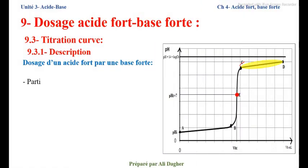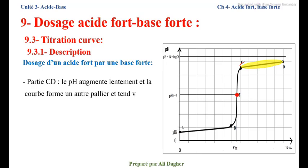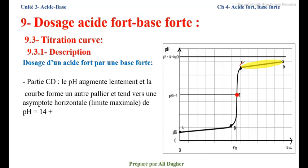Partie C-D : le pH augmente lentement de nouveau et la courbe forme un autre palier et tend vers une asymptote horizontale, c'est-à-dire la limite maximale de la courbe, de pH = 14 + log(Cb), qui est le pH de la solution de la base se trouvant dans la burette.